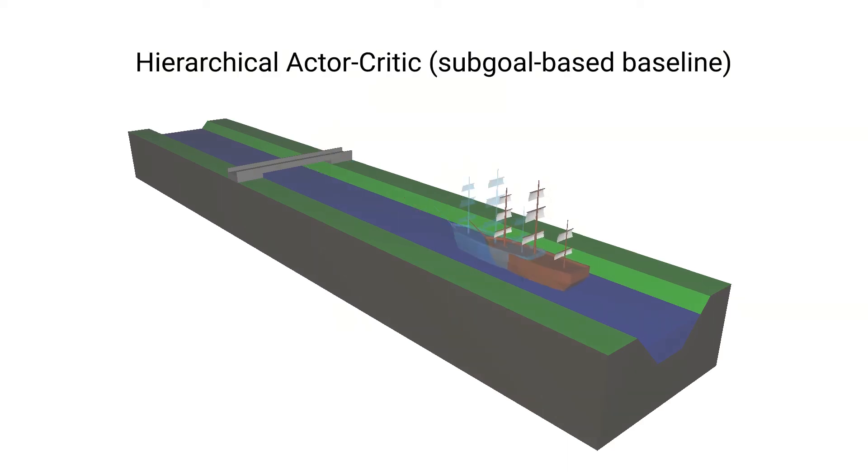Even though the optimal solution is obvious, the hierarchical actor-critic baseline does not find it, but keeps bumping into the drawbridge while it is still closed. This is to be expected, since the lower level in the hierarchy is tasked with achieving a subgoal as fast as possible, and the hierarchy therefore cannot wait without using up a large number of subgoals.